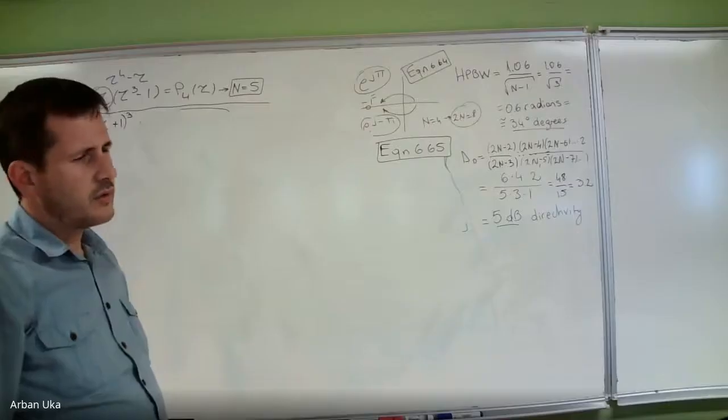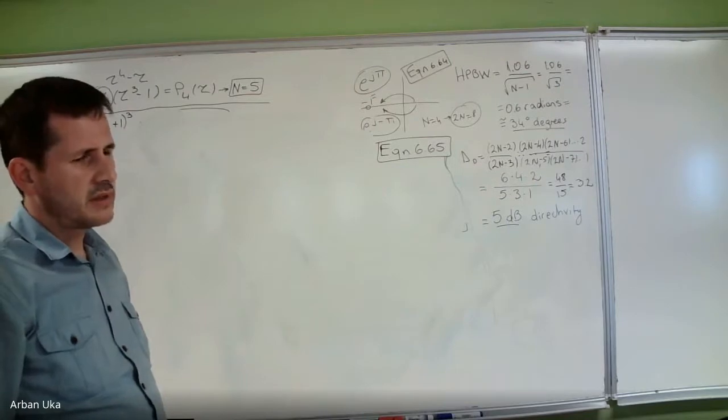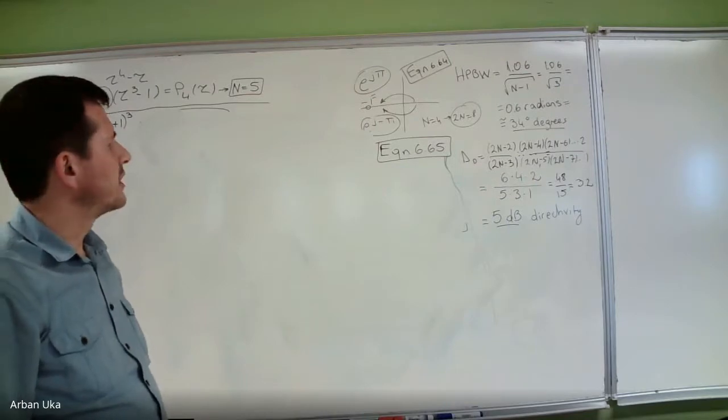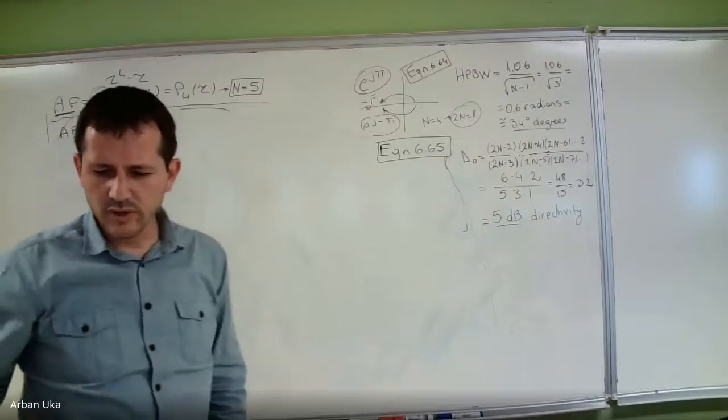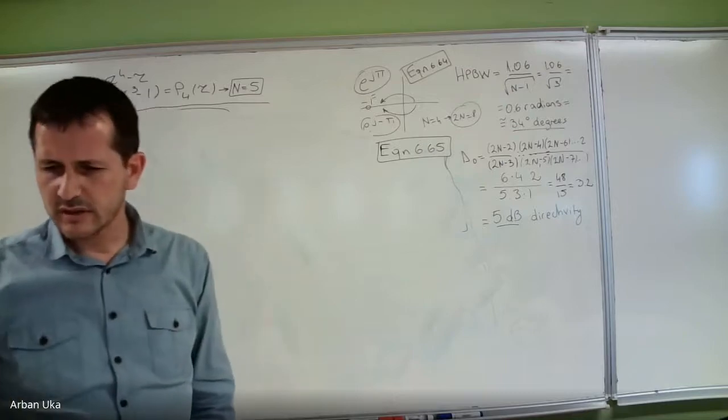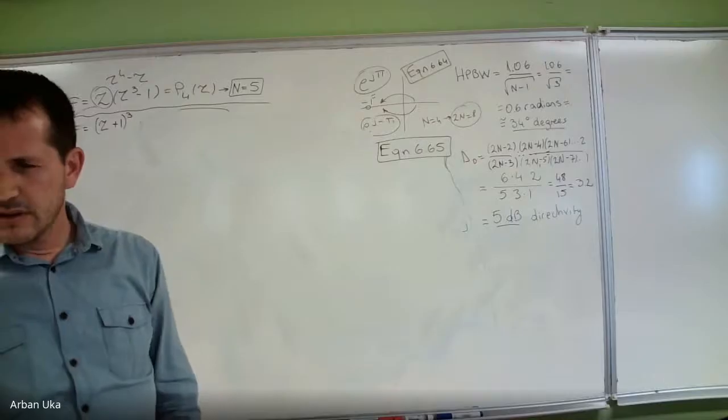A student asks: regarding the equation just written — it belongs to the binomial arrays. The question is, how do we know which equation we are going to use? The professor responds: this is something we did in Chapter 6, and after that it is for the Chebyshev array, but the formulas change for Chebyshev. You are right — this formula is for binomial distribution.